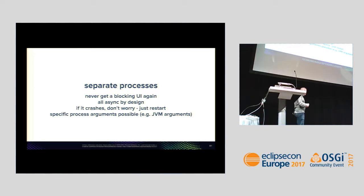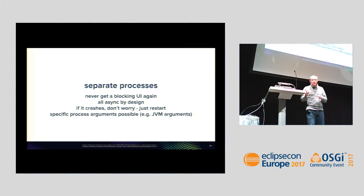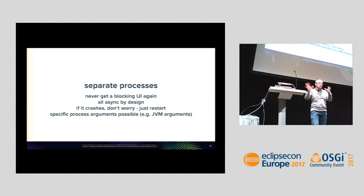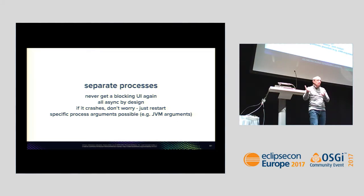An interesting side effect when implementing language servers in Java is that you can specify how the JVM is launched. You can set specific JVM arguments and options for individual language servers. For example, you can say this language server has a maximum heap size of one gigabyte. If it consumes more and crashes, it doesn't destroy the user experience for other language servers. You can specify different memory limits for each server since they're all independent of each other.